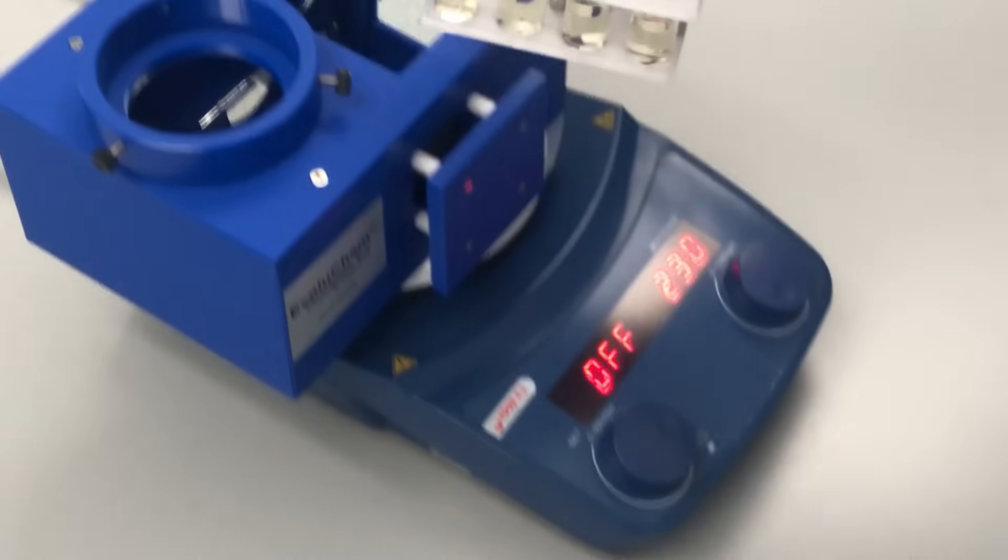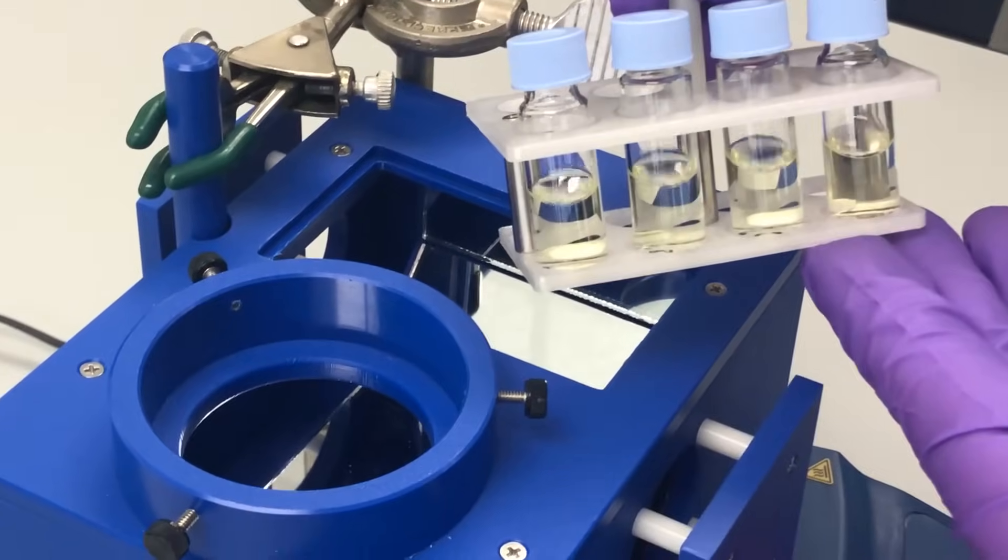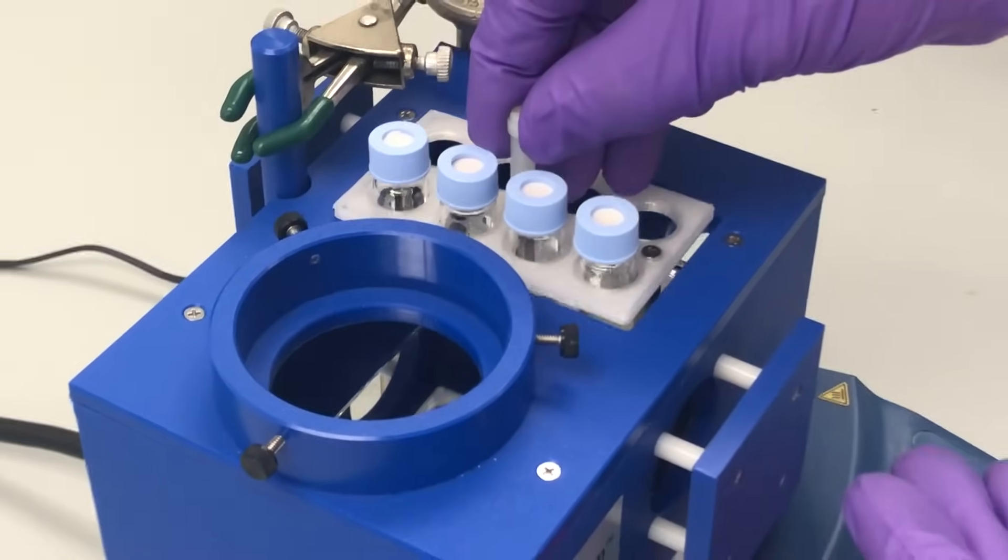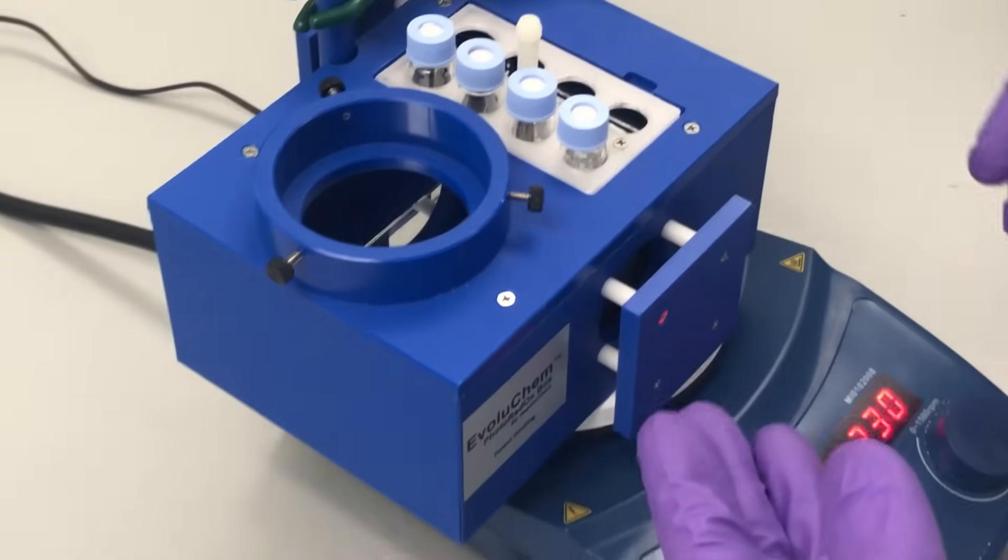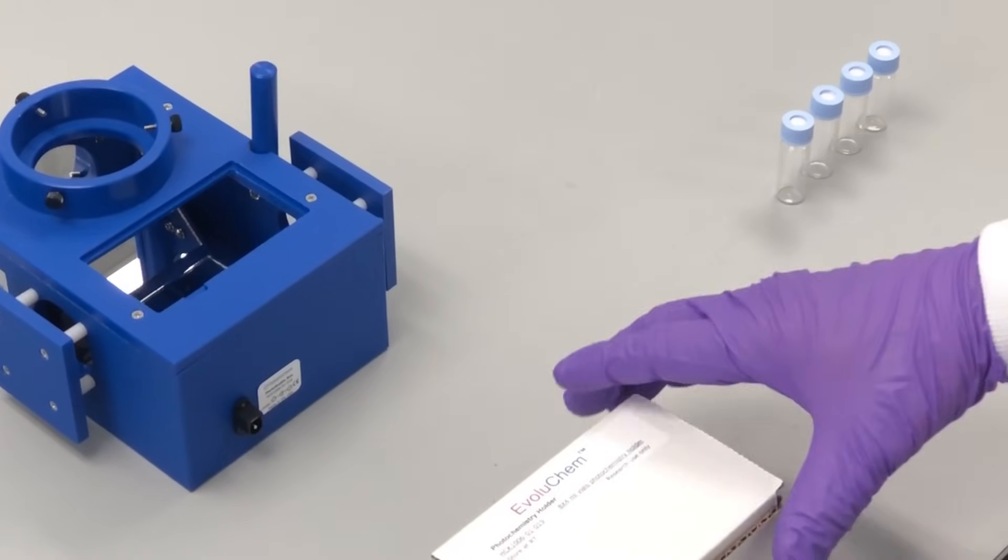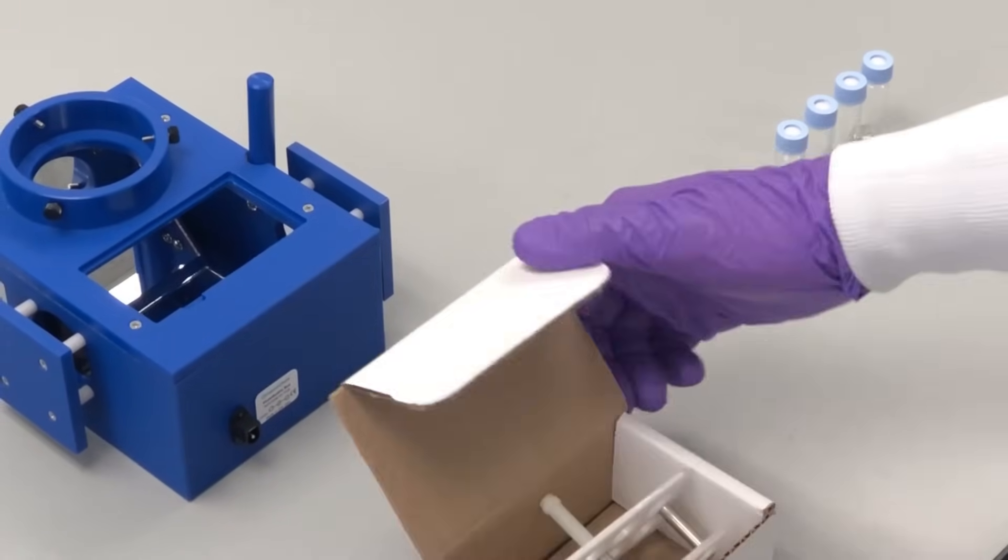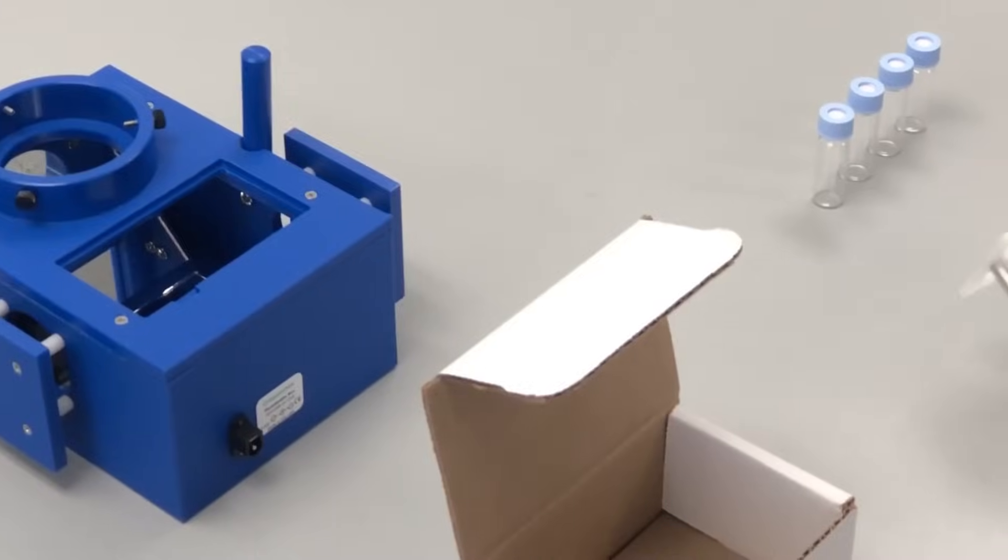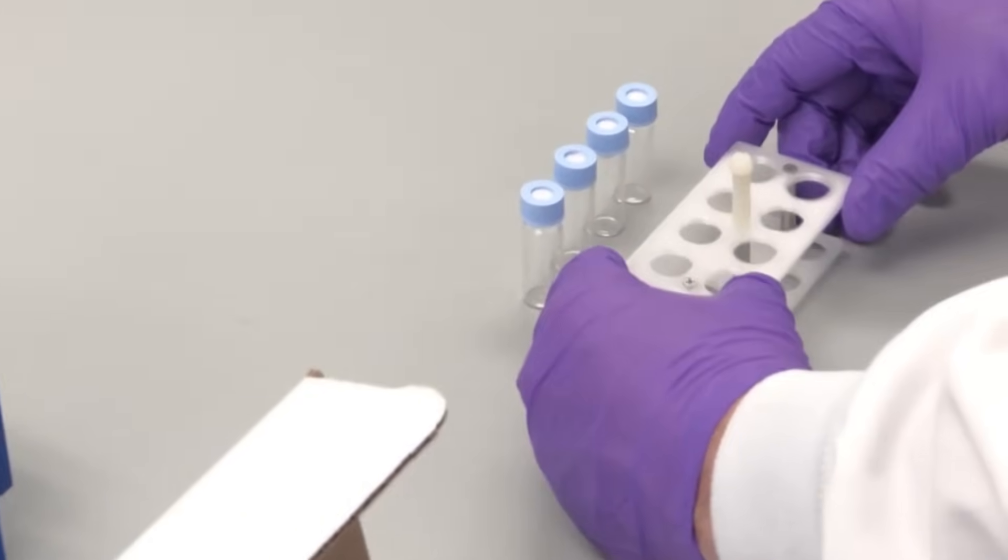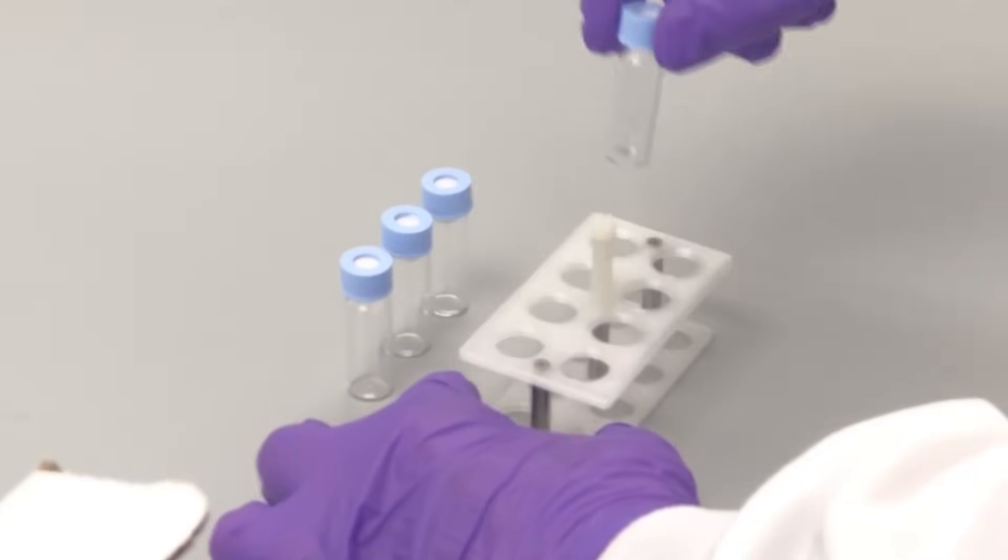EvoluChem offers several vial holder options for our photoreactors enabling anywhere from two up to 16 simultaneous reactions depending on the size of the vials. Each vial holder can be ordered separately and comes in its own package. Your vials can be easily loaded into the holder and then placed into the photoreactor's reaction chamber.